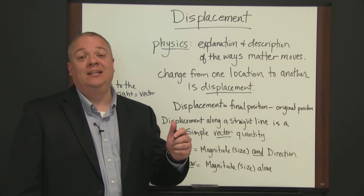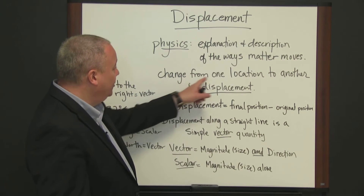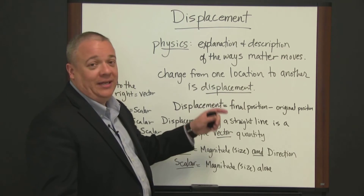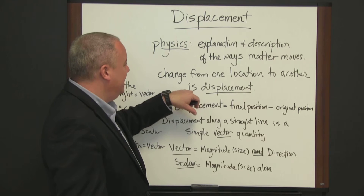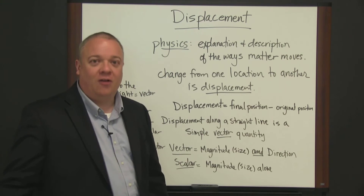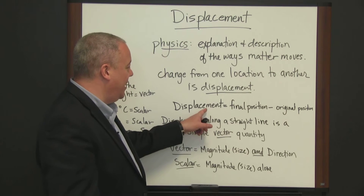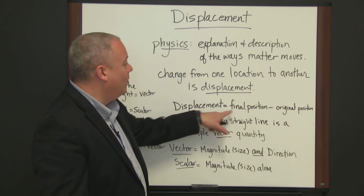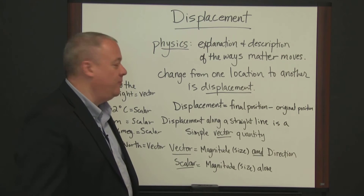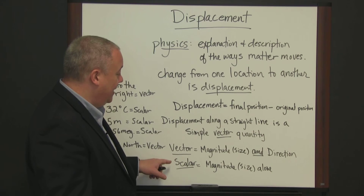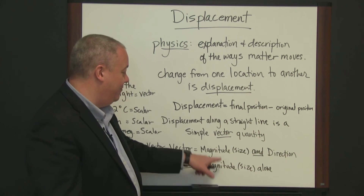Displacement is the main thing to take away from this video. That is the movement — the change in location from one place to another of matter. Think of a golf ball, think of picking up and moving a box — matter moving from one place to another. Displacement equals the final position minus the original position. Within displacement, we can talk about scalars and vectors. The difference between them being that vectors also include direction, whereas scalars only have magnitude.